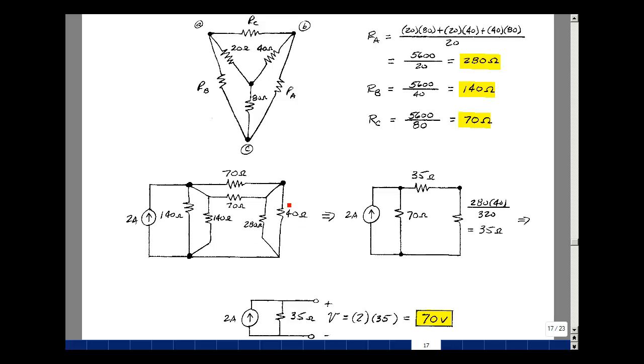So let's put these two together to be the product over the sum. So 280 times 40 over 280 plus 40 turns out to be 35 ohms. 70 in parallel with 70 is just half of 70 or 35.